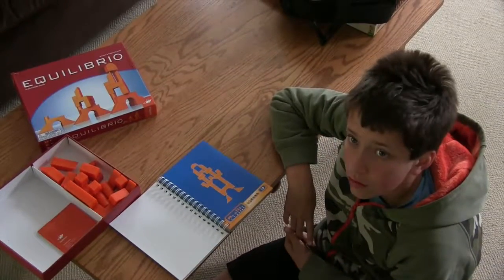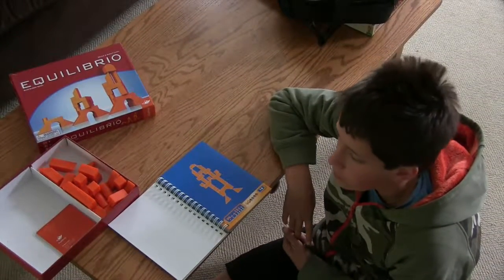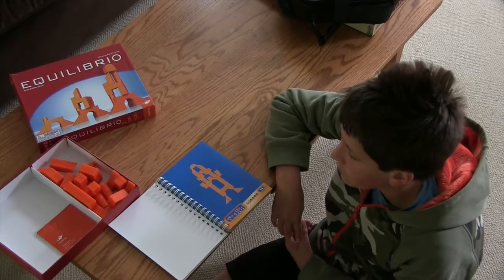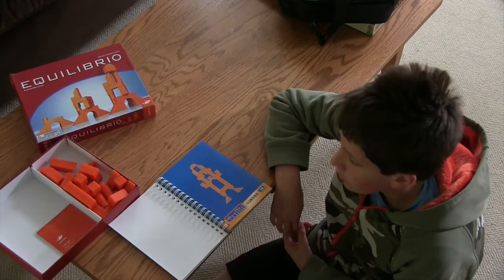So this is Family Math 422D, because your brother did three movies. We're looking at the game Equilibrio this morning. What do you remember or think about this game?